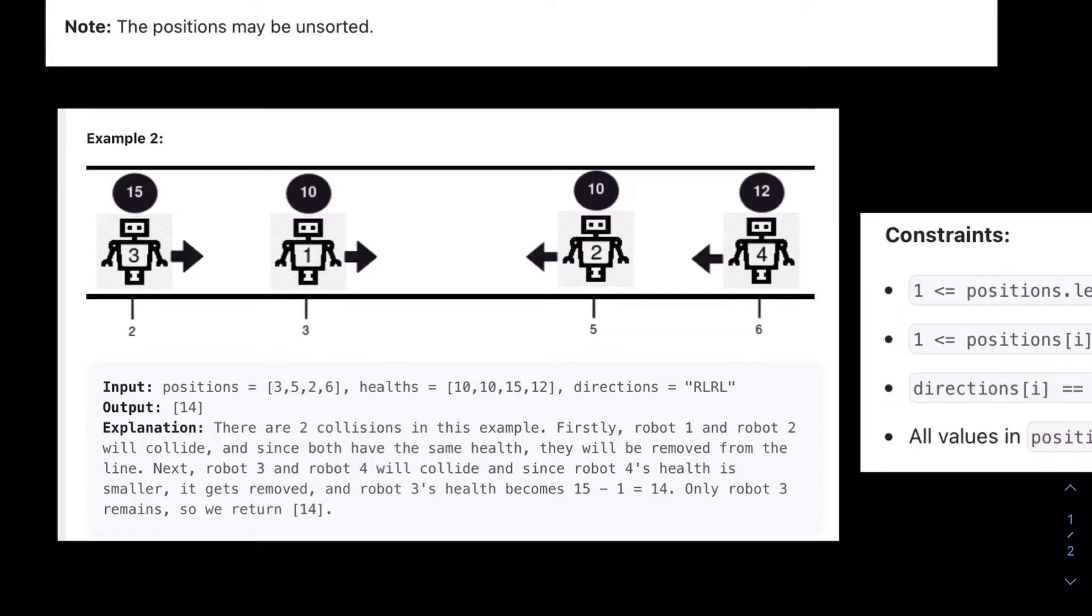So it will continue along its way, but its HP will decrease by 1, so it will go to 14 HP, so the answer will be just 14. And note, the output is just the HP, it doesn't need the direction of the robot, it's just the HP of the remaining robots.